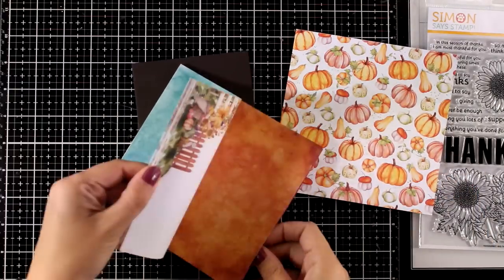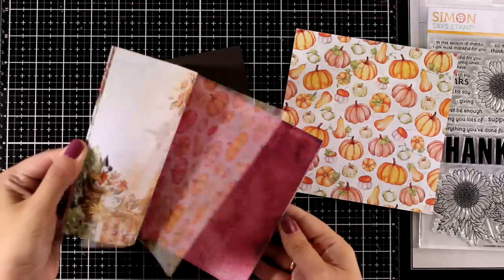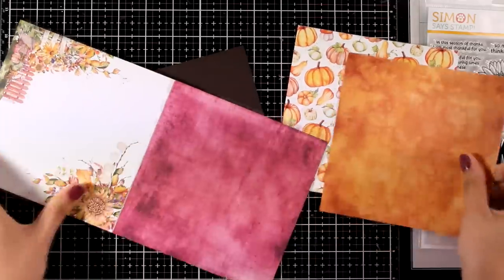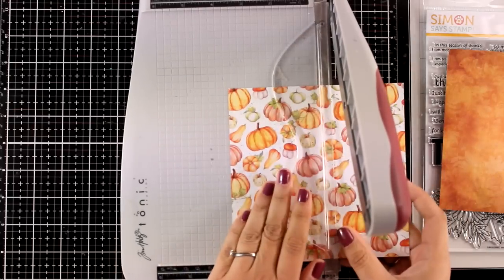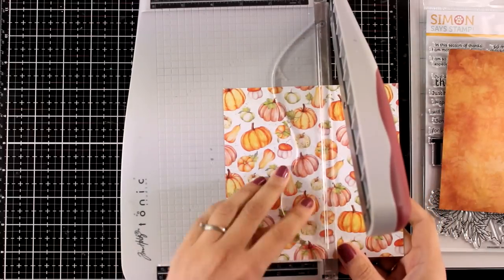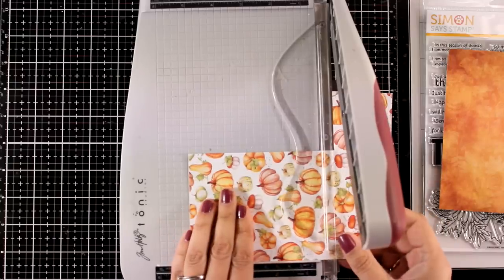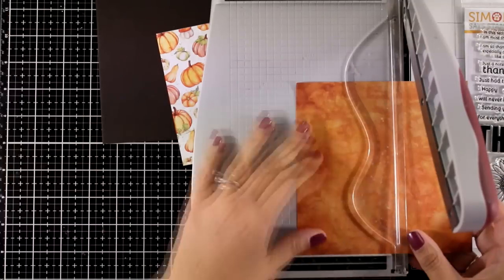And I'm going to pair this one with a couple of pattern papers. I chose the one with the pumpkins just because it is my favorite. And I'm trying to find a solid one that would match nicely. I finally went with this orange one. And I'm going to cut both of those papers to be slightly smaller than the standard card so they will give me a little border. So that's 3¾ by 5.